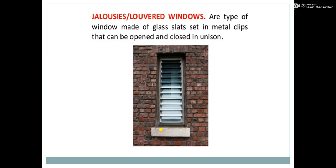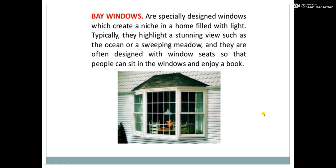The next is the louvred window. These are windows made of glass slits set in metal clips that can be opened and closed in unison. These types of windows are generally provided in WC and bathrooms, in which glass slits are used.